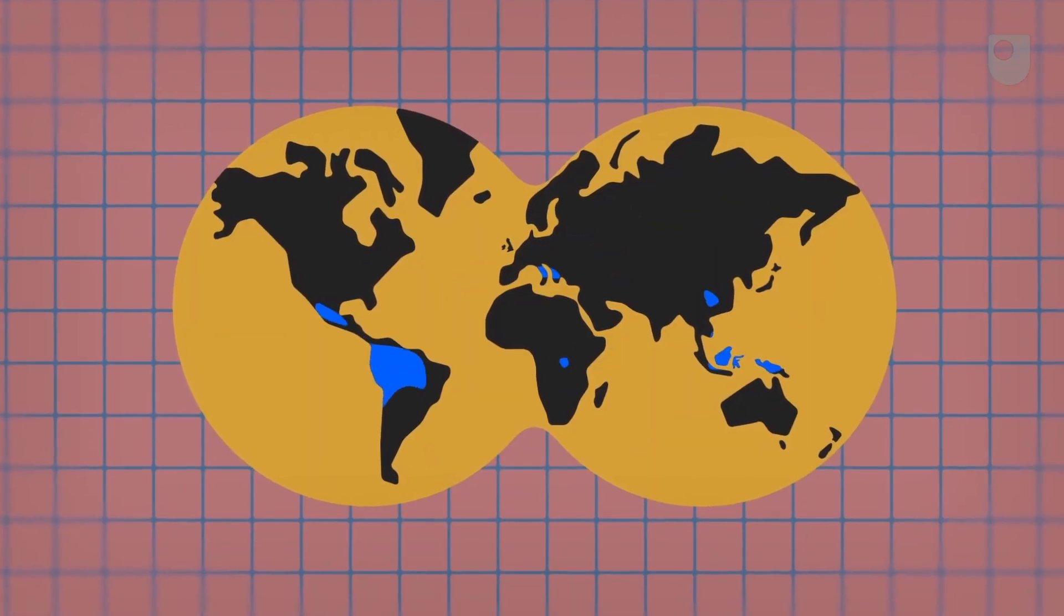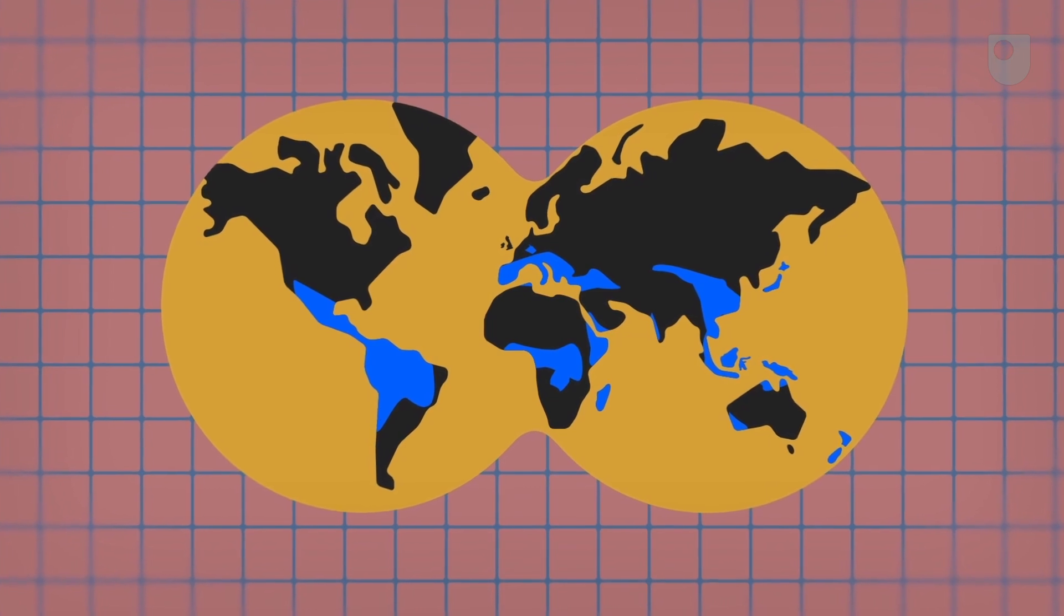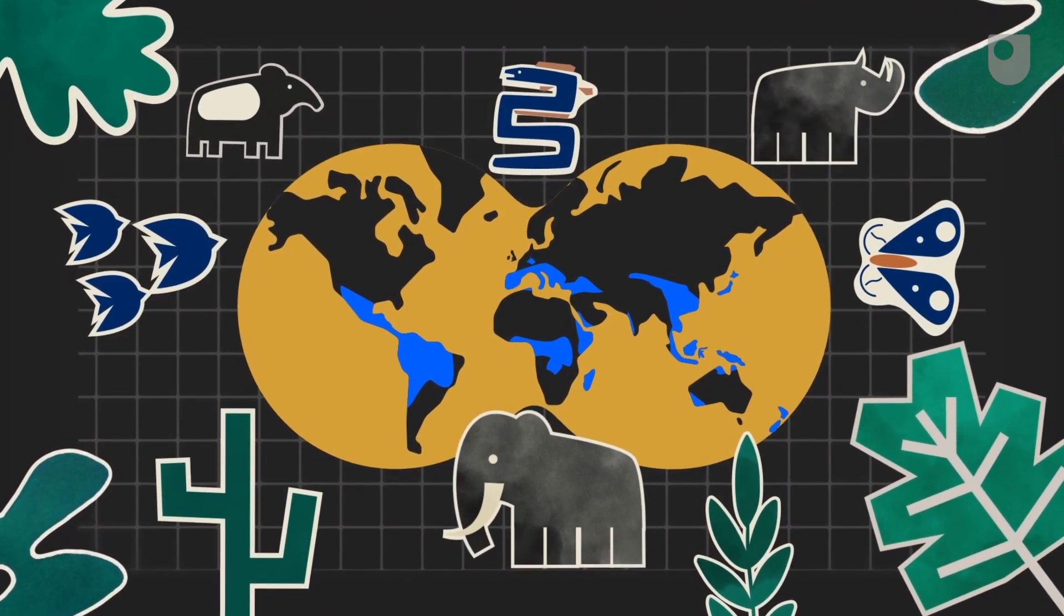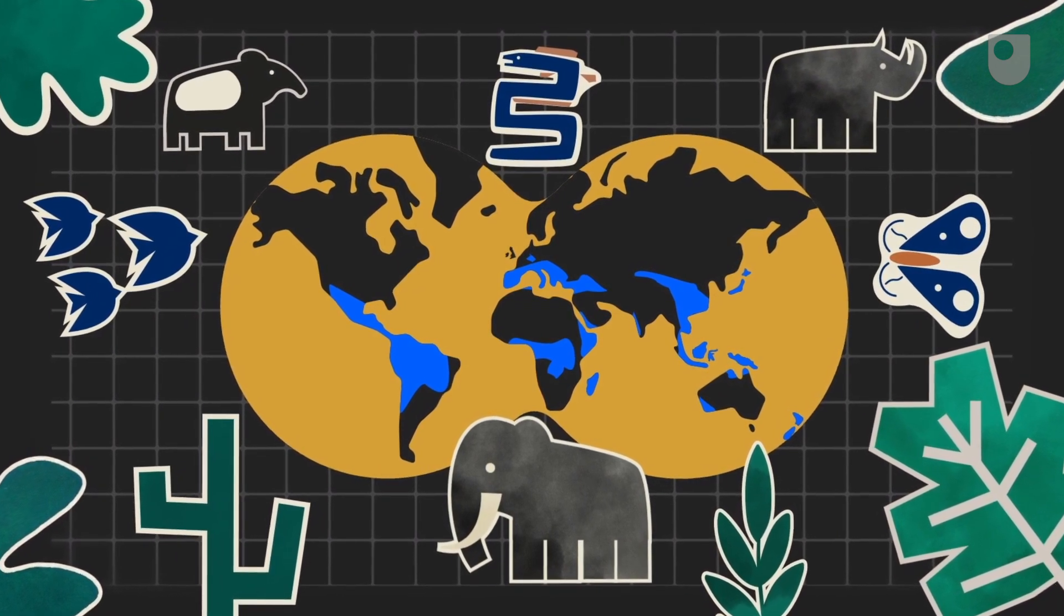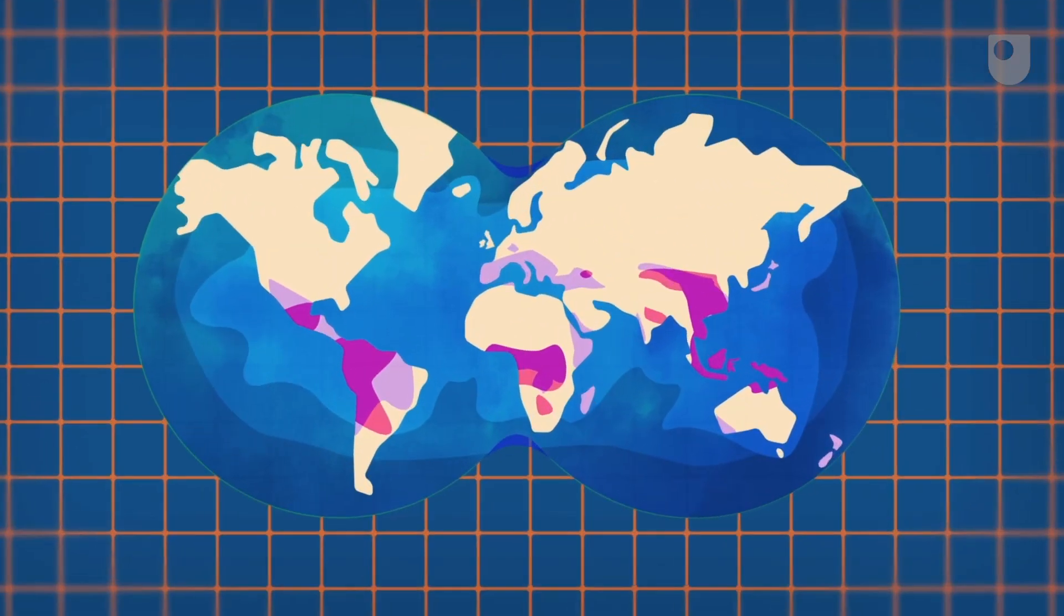This is a different map. These are the world's most biodiverse regions, areas teeming with life. Nearly half of the world's plant species are found here and nowhere else. See how the two maps overlap.